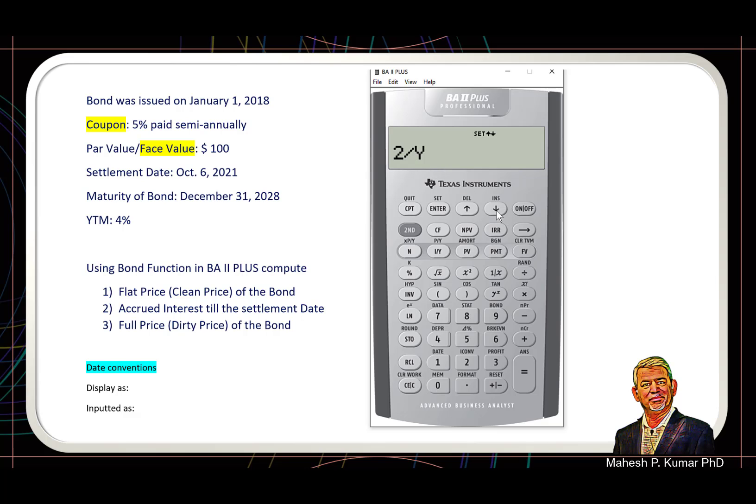We go back here—sorry, we press the down arrow here—and it shows 2/Y. It means interest or coupon payments are made semi-annually. Yes, this problem also has semi-annual coupon payments. But if at all it is annual coupon payment, then what you need to do: second and set, you can set it to annual. 1/Y is annual. But we are in this question into semi-annual coupon payments, so we will switch back to where we came from, second set.